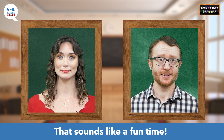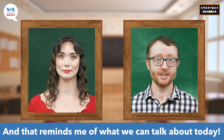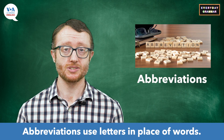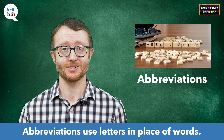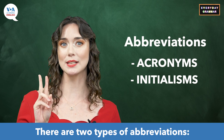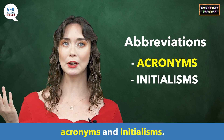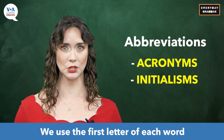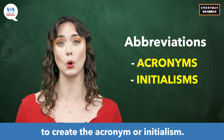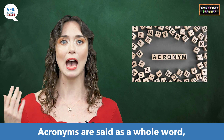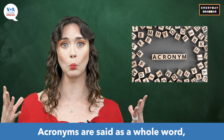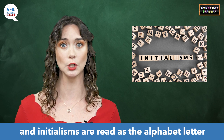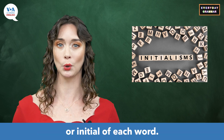That sounds like a fun time. And that reminds me of what we can talk about today — abbreviations! Abbreviations use letters in place of words. There are two types of abbreviations — acronyms and initialisms. We use the first letter of each word to create the acronym or initialism. Acronyms are said as a whole word, and initialisms are read as the alphabet letter or initial of each word.